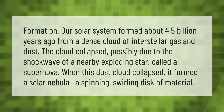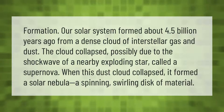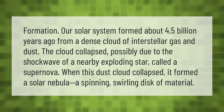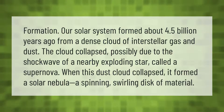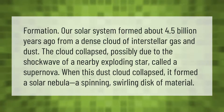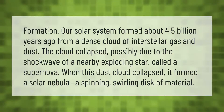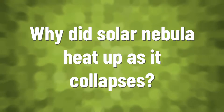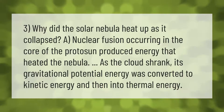Our solar system formed about 4.5 billion years ago from a dense cloud of interstellar gas and dust. The cloud collapsed, possibly due to the shock wave of a nearby exploding star called a supernova. When this dust cloud collapsed, it formed a solar nebula — a spinning, swirling disk of material.